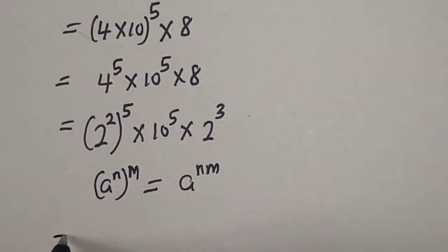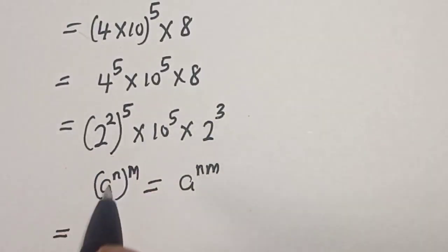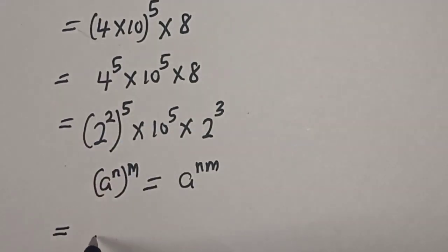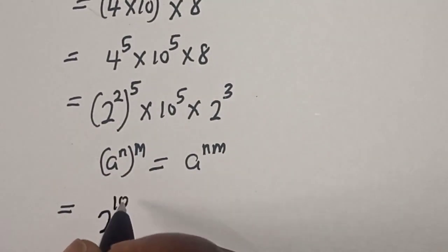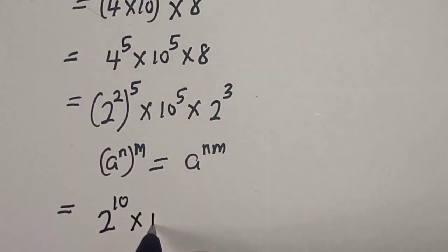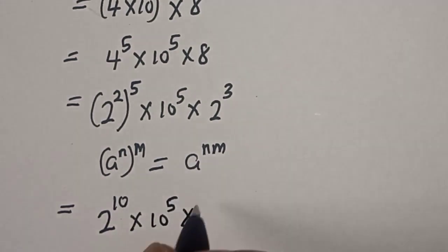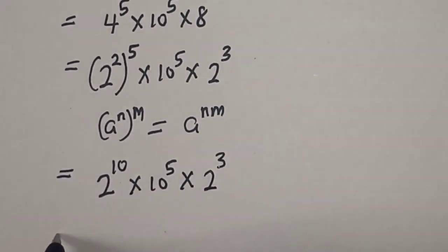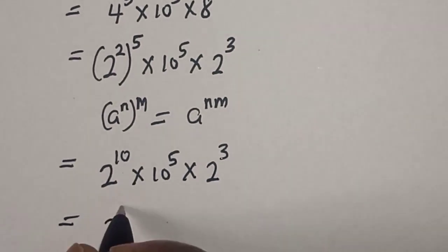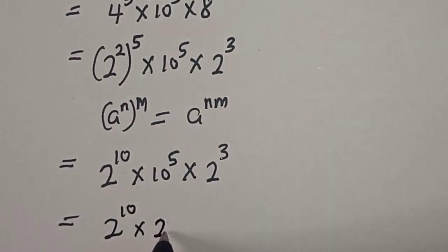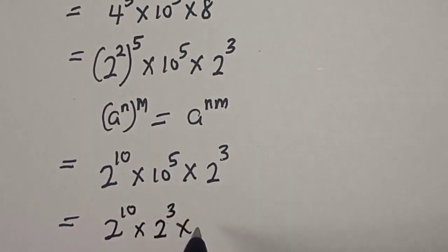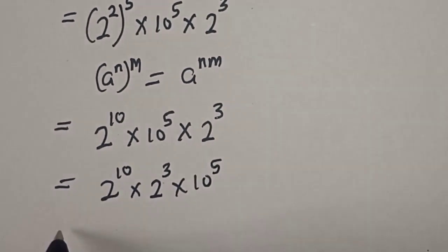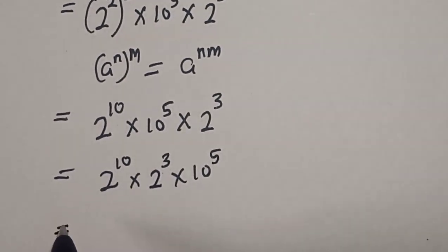So 2 raised to the power of 2 times 5 gives us 2 raised to power 10. And we also have 2 raised to power 3 from the 8. Rearranging, we have 2 to the power of 10 multiplied by 2 to the power of 3, multiplied by 10 raised to power 5.